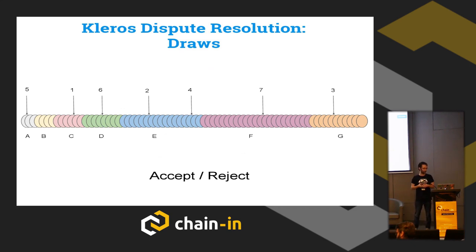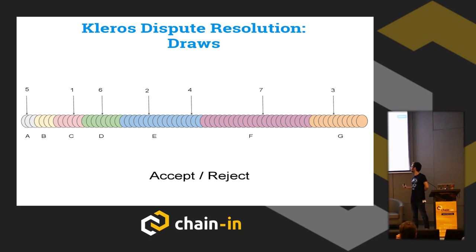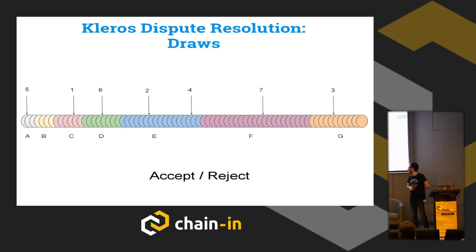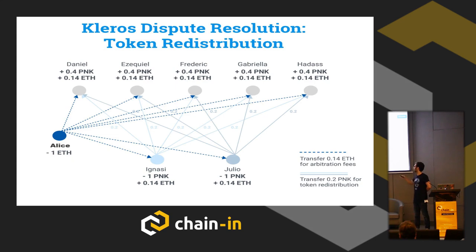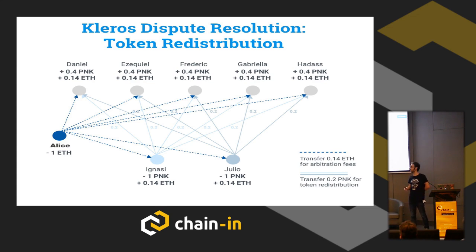We're going to see an example of dispute resolution in Kleros — just one example, and we have a lot of competing approaches. Here we have the dispute between Alice and Bob. A few tokens are drawn. Obviously we can't draw a human because we don't have identity on chain; the best we can do is draw tokens. Almost everyone is drawn except D, and E is drawn twice because E has a lot of tokens. They vote — most vote in favor of Bob but some in favor of Alice. From Alice's ETH deposit, arbitration fees are given to all jurors. Jurors Ignacio and Julio, who voted for Alice, lose a few tokens to the jurors who voted for Bob.